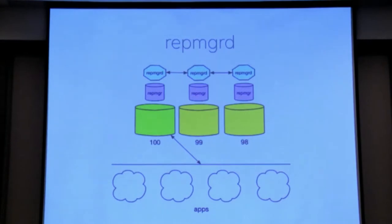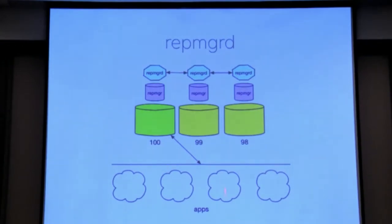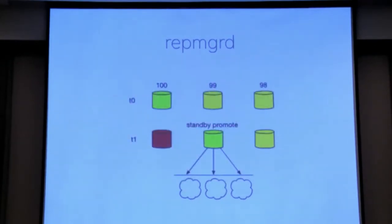The way RepManagerD works is it sits on top of your database. It expects, in most cases, a passwordless SSH connection between each of these rep managers and each of these databases. You'd have one node with your database, a RepManager database running there, and RepManagerD governing all the rest of the rep managers. Your app would probably be talking to the master database, which is governed by RepManager.